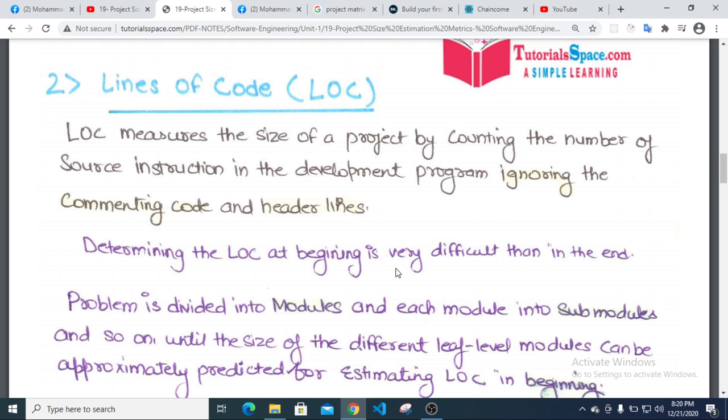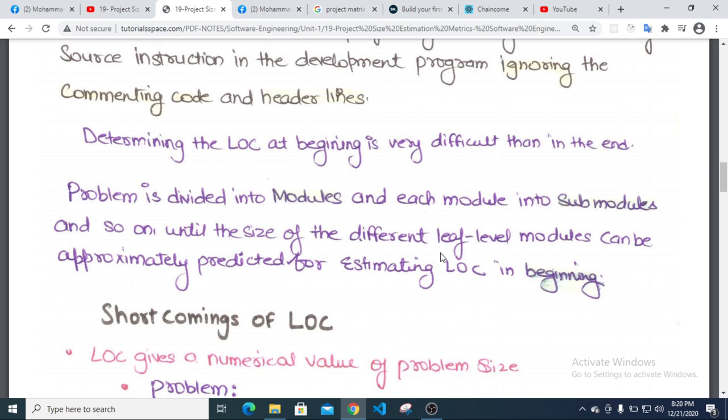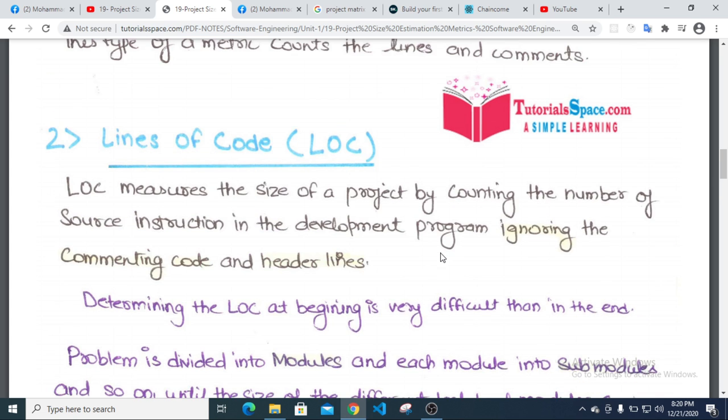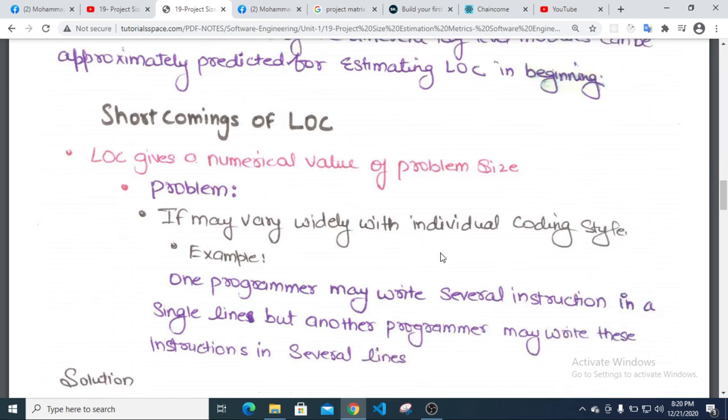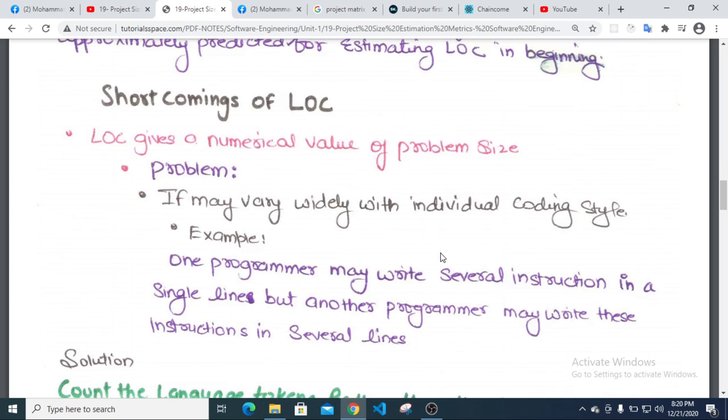The problem is divided into modules and each module into submodules and so on, until the size of the different leaf-level modules can be approximately predicted for estimating LOC in the beginning. There are shortcomings with LOC metrics. LOC is a numerical value and may vary with individual coding style.